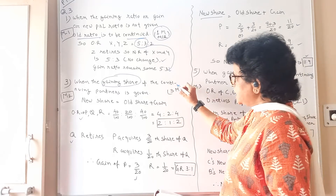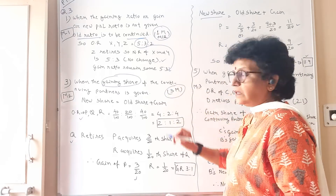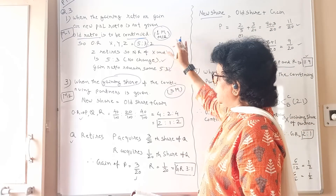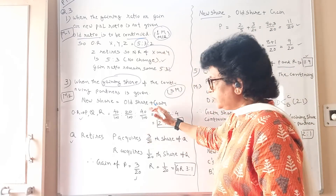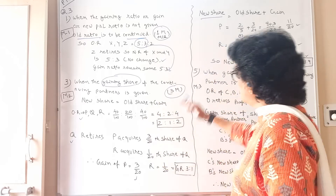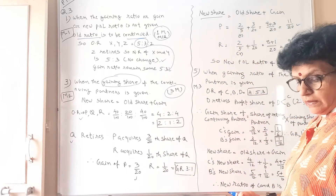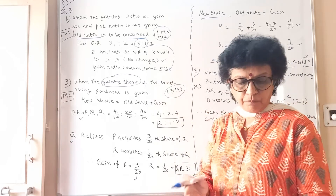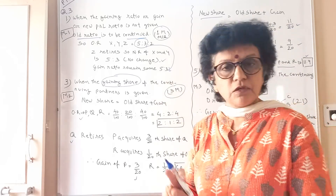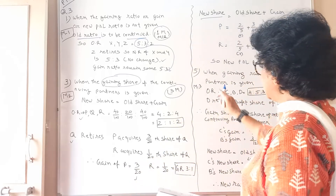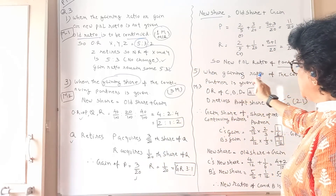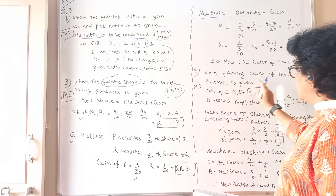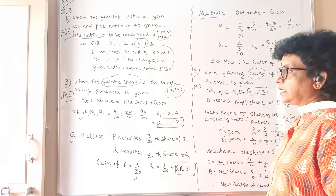This question can appear for 3 marks in Section D — there are 3 steps to do, earning 3 marks. A 1-mark question can be answered orally. This is the second method we have done. Now question number 5 — that is the third method. The third method applies when the gaining ratio of the continuing partner is given. Note: here in the earlier question it was gaining share — the word makes the difference.